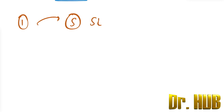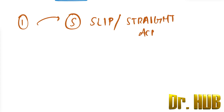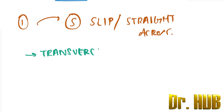Type 1 corresponds to the letter S in the mnemonic SALTR. S means it is a slip or straight across. The key point here is that it is a transverse fracture through the growth plate.